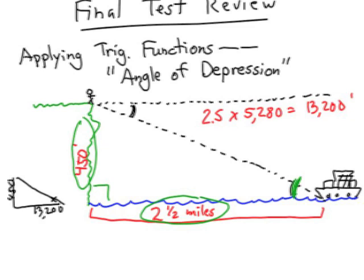Tangent of my unknown angle x equals 450 feet compared to 13,200 feet. So the tangent of x equals, let's divide this out, and we get 0.0341.